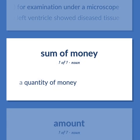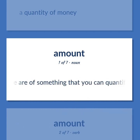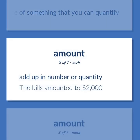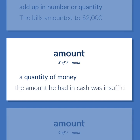A quantity of money. How much there is or how many there are of something that you can quantify. Add up in number or quantity. The bills amounted to $2,000. A quantity of money. The amount he had in cash was insufficient.